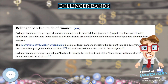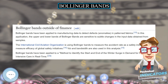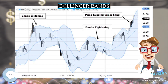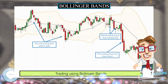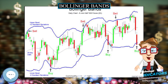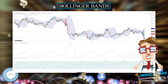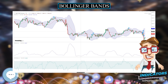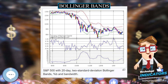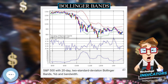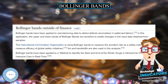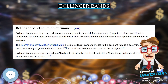Percent B equals 1 at the upper band and 0 at the lower band. Bandwidth tells how wide the Bollinger Bands are on a normalized basis. Using the default parameters of a 20-period lookback and plus or minus 2 standard deviations, bandwidth is equal to 4 times the 20-period coefficient of variation. Uses for percent B include system building and pattern recognition. Uses for bandwidth include identification of opportunities arising from relative extremes in volatility and trend identification.